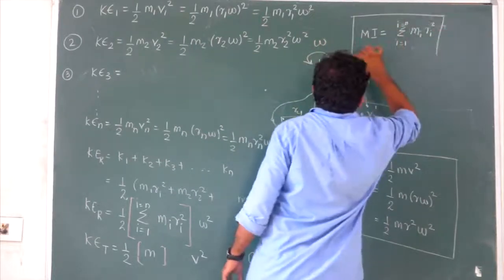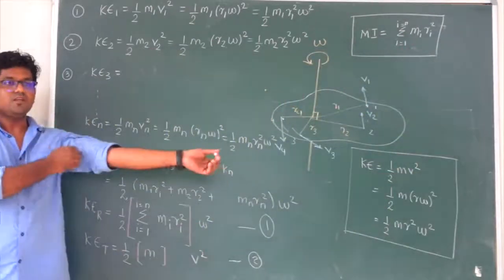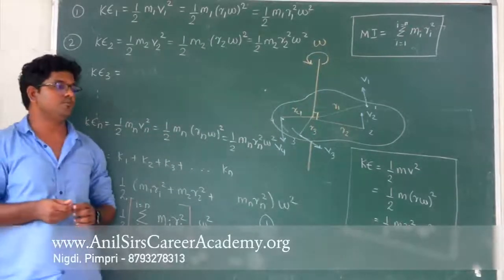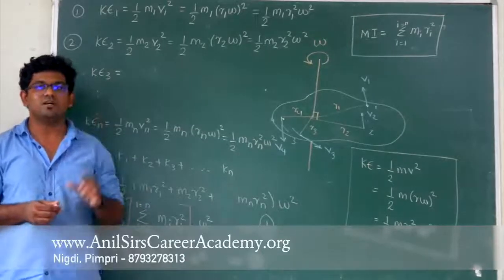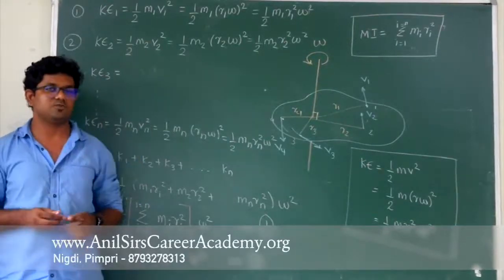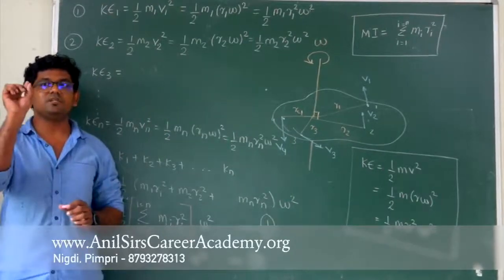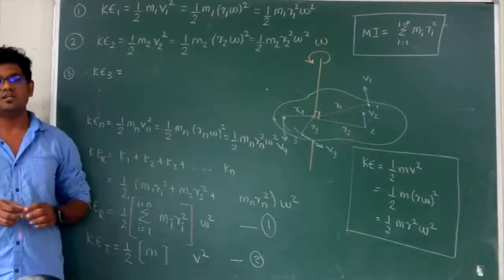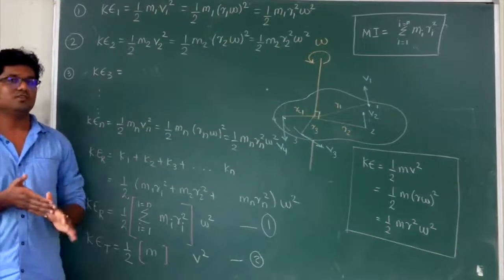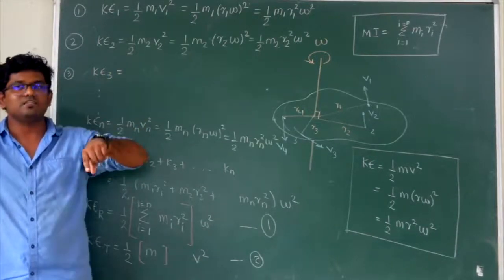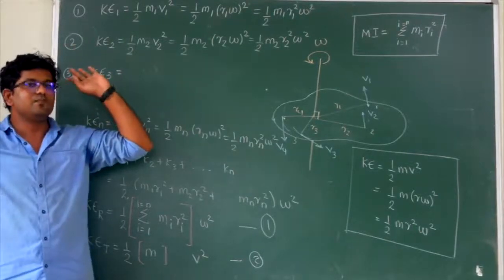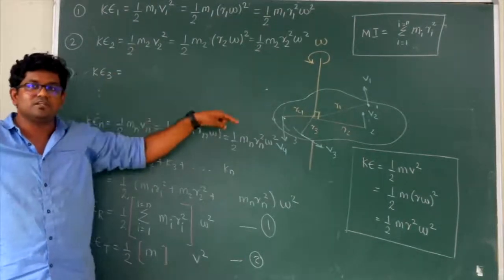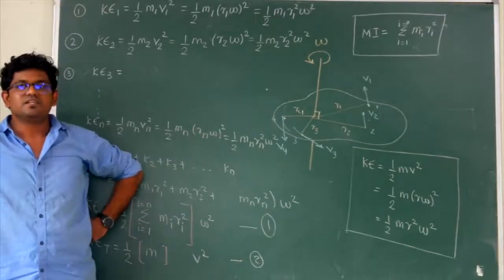This formula is valid only for point objects. If you have three point objects, the formula becomes M1R1 squared plus M2R2 squared plus M3R3 squared. Similarly, for five objects, you add M4R4 squared plus M5R5 squared. This formula considers each part of the object as a point mass.